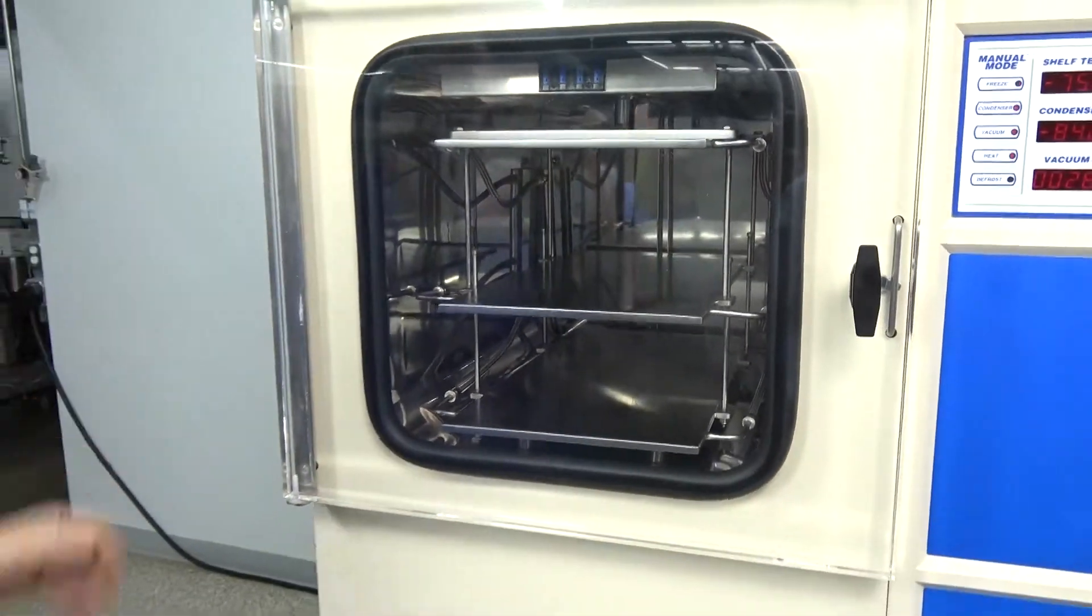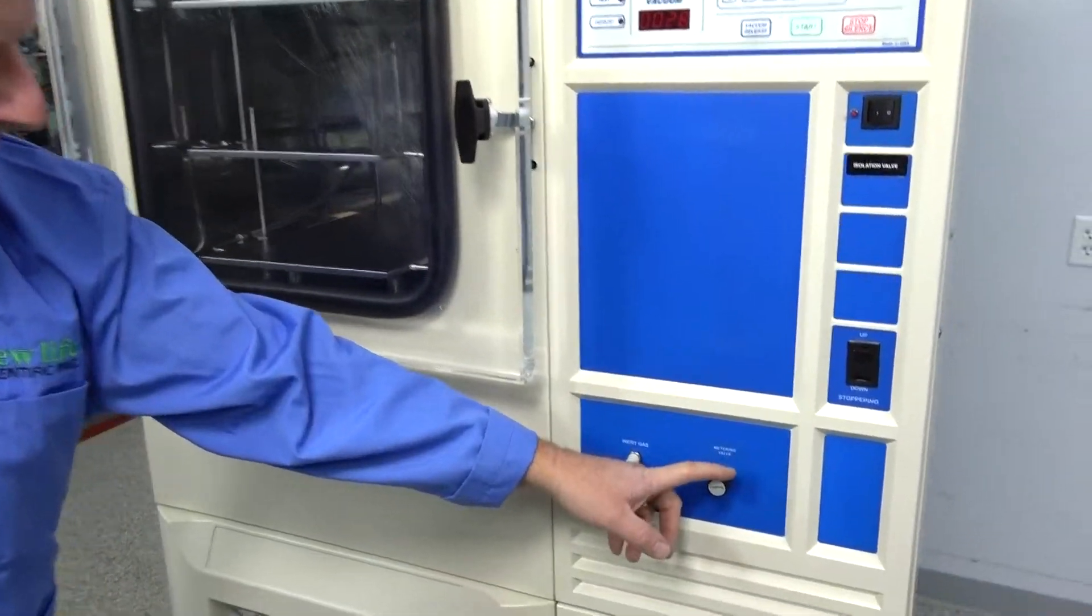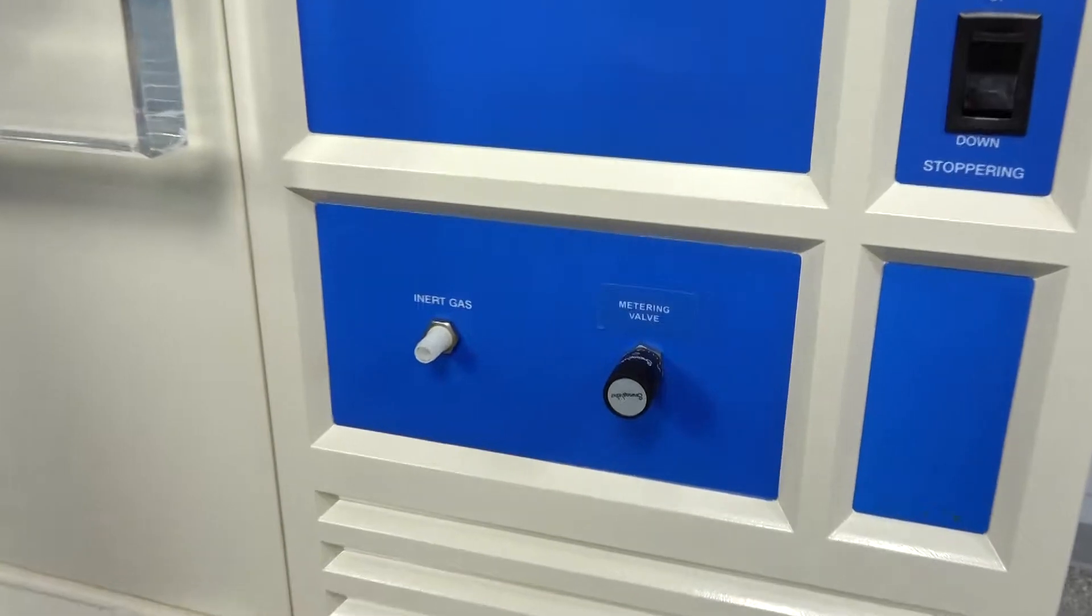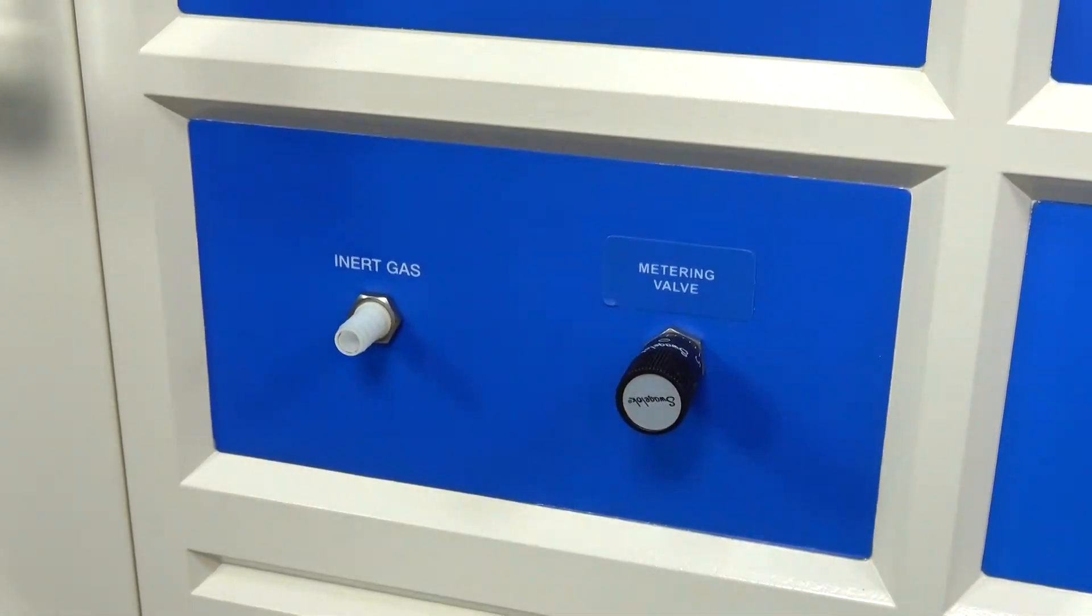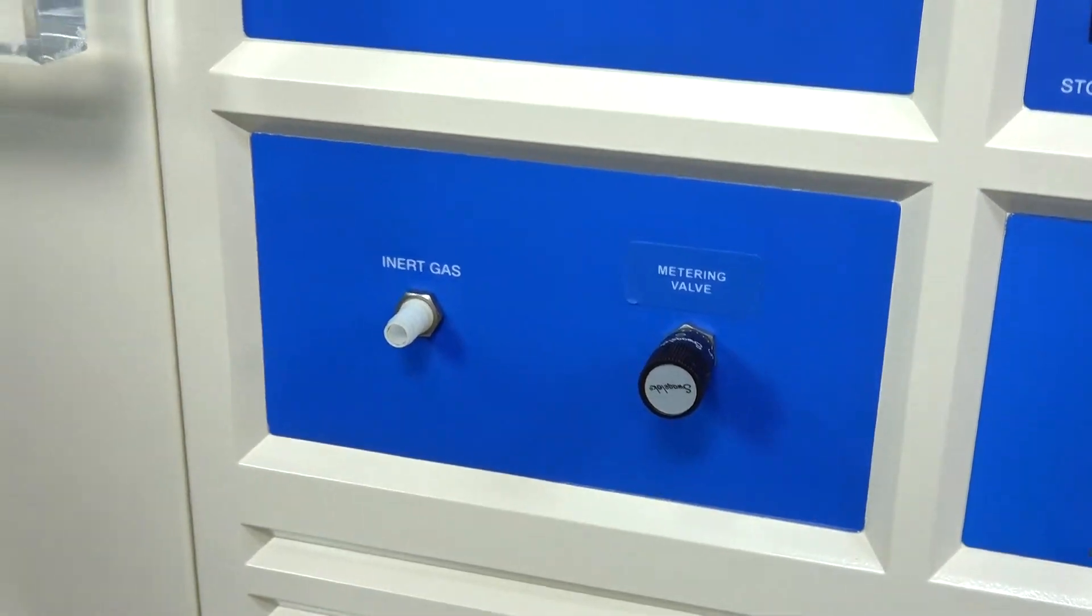And I want to just kind of do a walk around, but I just want to point out also the metering valve here for adjusting your vacuum levels, and then the inert gas option if you want to bring in an inert gas rather than just ambient.